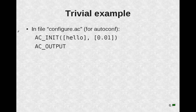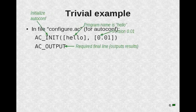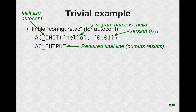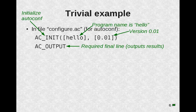Let's start with a trivial example. In the file configure.ac — the .ac stands for AutoConf — we can put in two simple commands. One, AC_INIT, which initializes AutoConf, giving it parameters: in this case the name of the program, 'hello', and the version number, 0.01. Notice the parameters are in square brackets — I'll talk more about that in a moment. And finally, AC_OUTPUT, the required final line in a configure.ac file, which outputs the results in the right places.